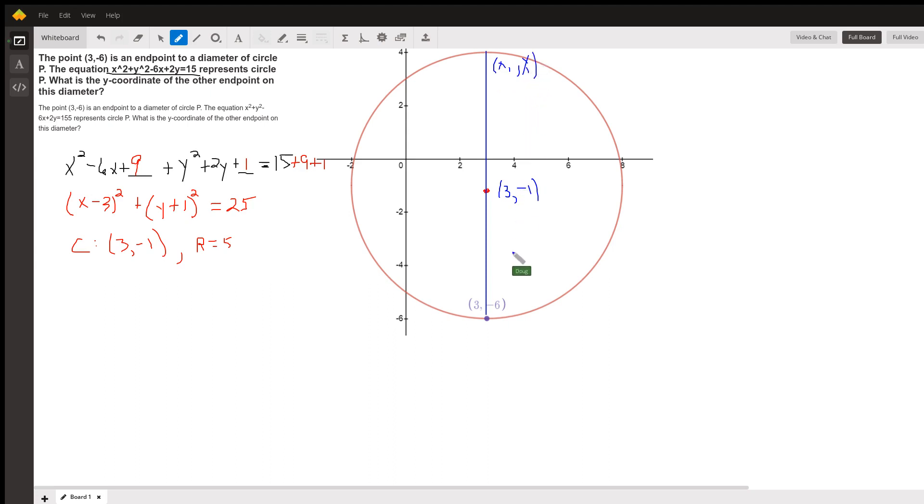And applying the midpoint formula with these y-coordinates tells us that the negative 1, which is the y-coordinate of the midpoint, has to equal the average of the y-coordinates of the two endpoints. That would be y sub 1 plus a minus 6, divided by 2.